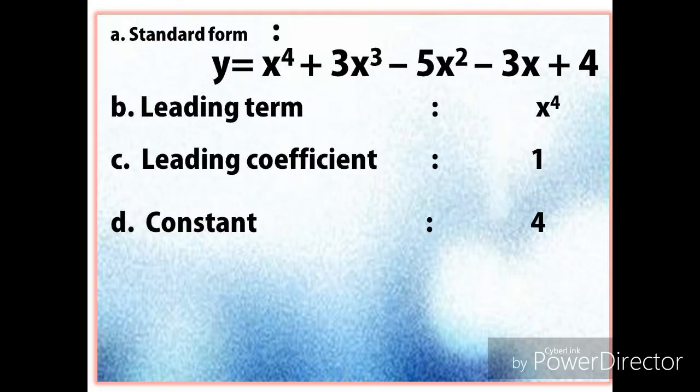So the standard form is Y equals X raised to the 4th plus 3X cubed minus 5X squared minus 3X plus 4. The leading term is X raised to the 4th, the leading coefficient is 1, and the constant is 4, which is the last term.